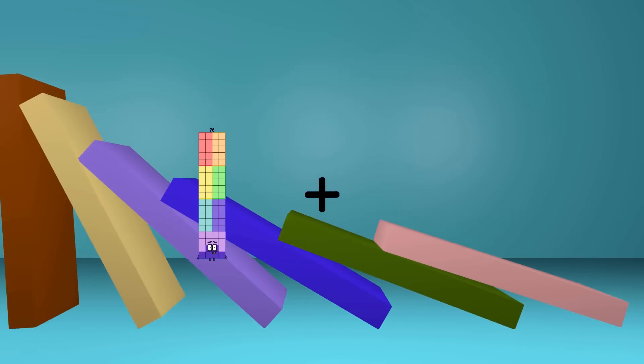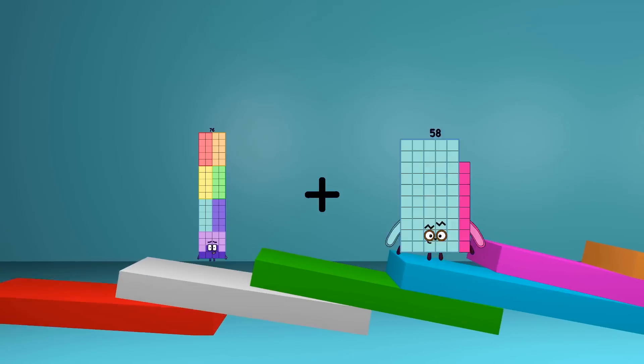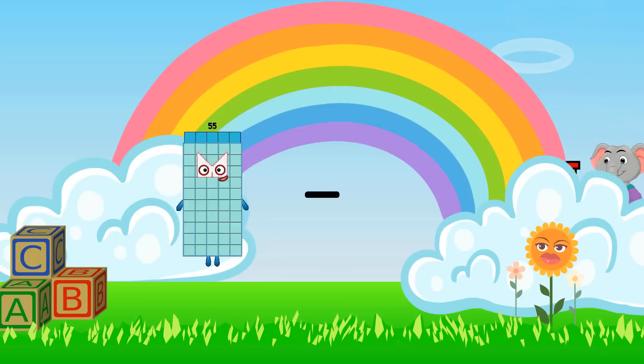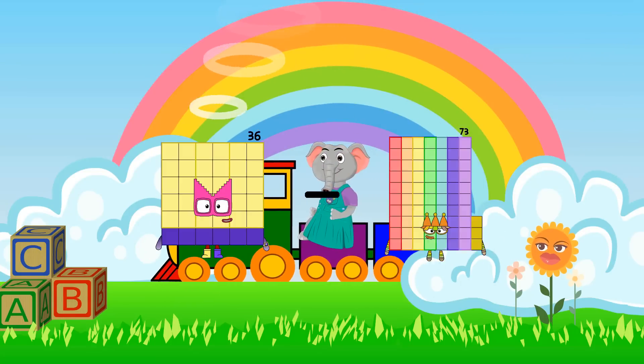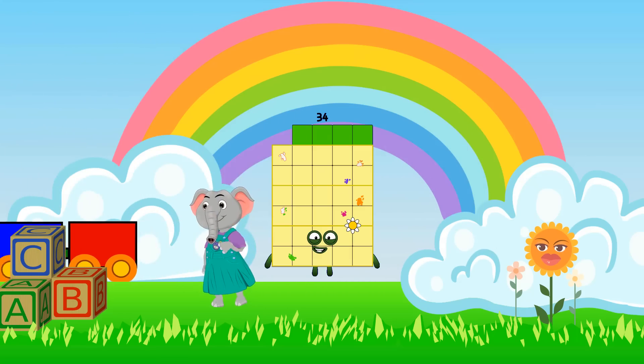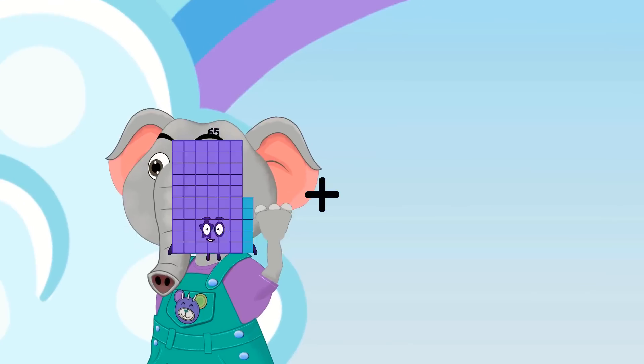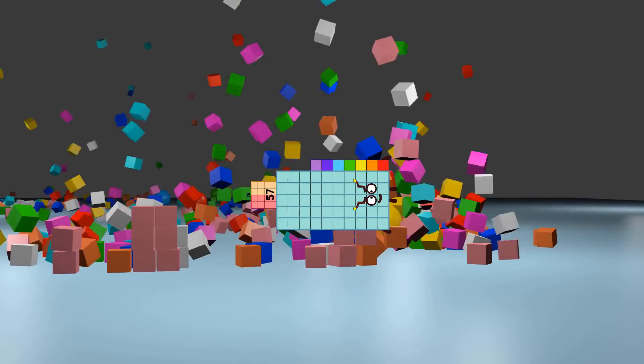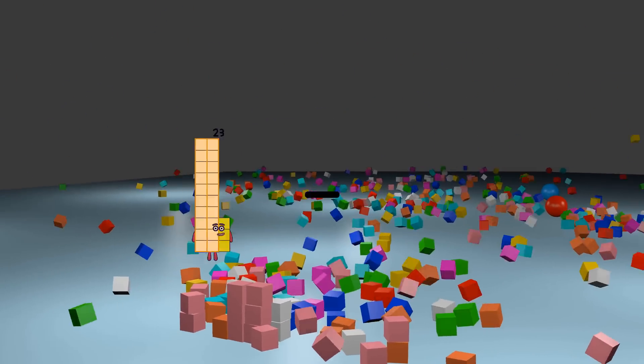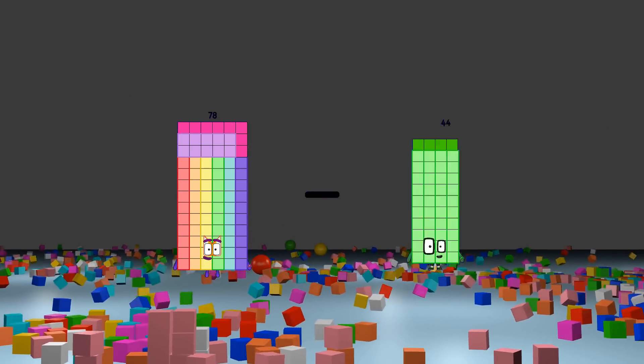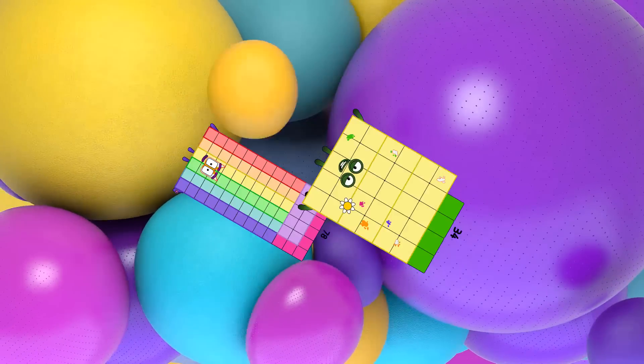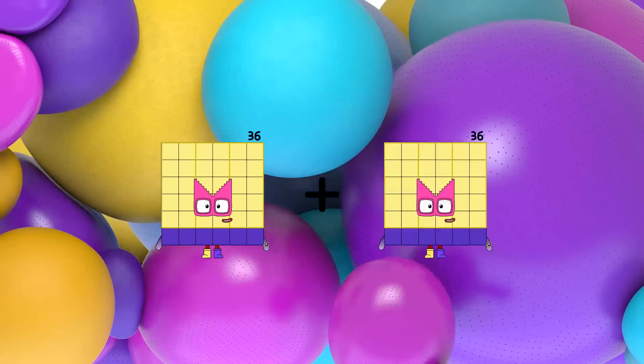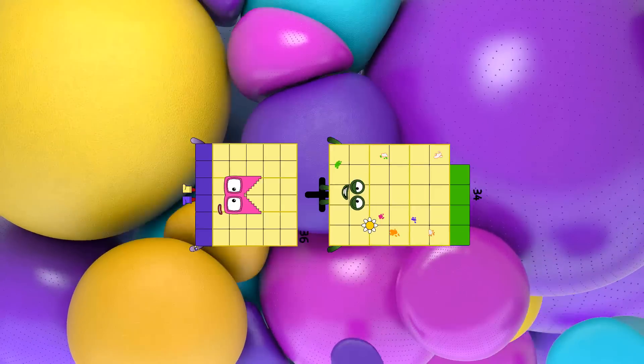76 plus 103 equals 179. 36 minus 2 equals 34. 76 plus 57 equals 133. 78 minus 34 equals 44. 36 plus 34 equals 70.